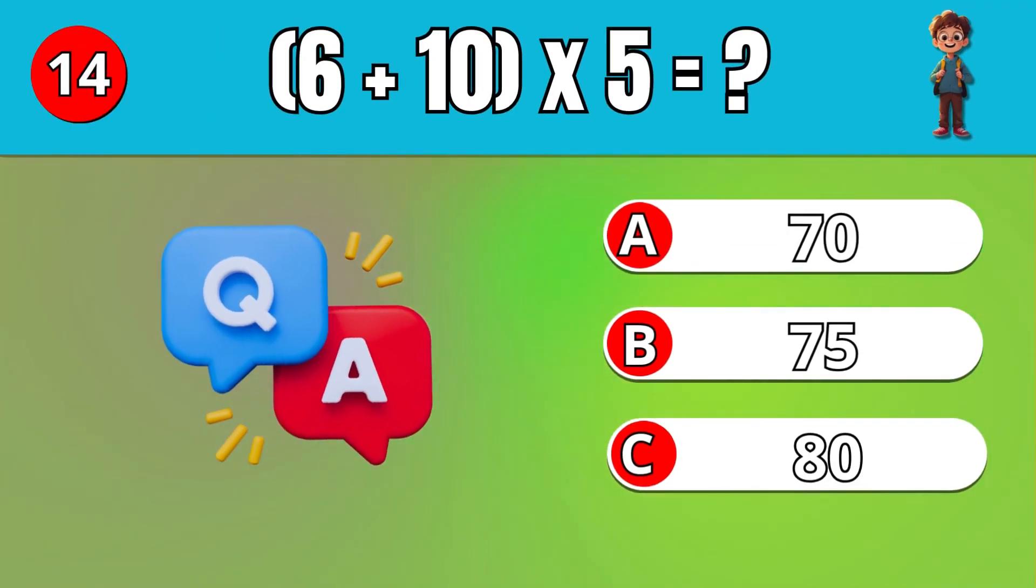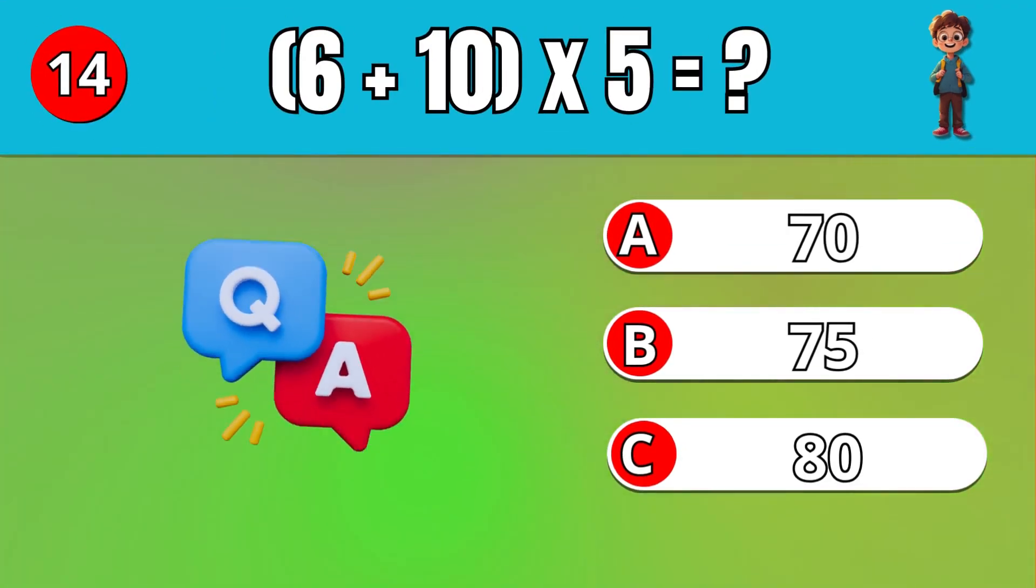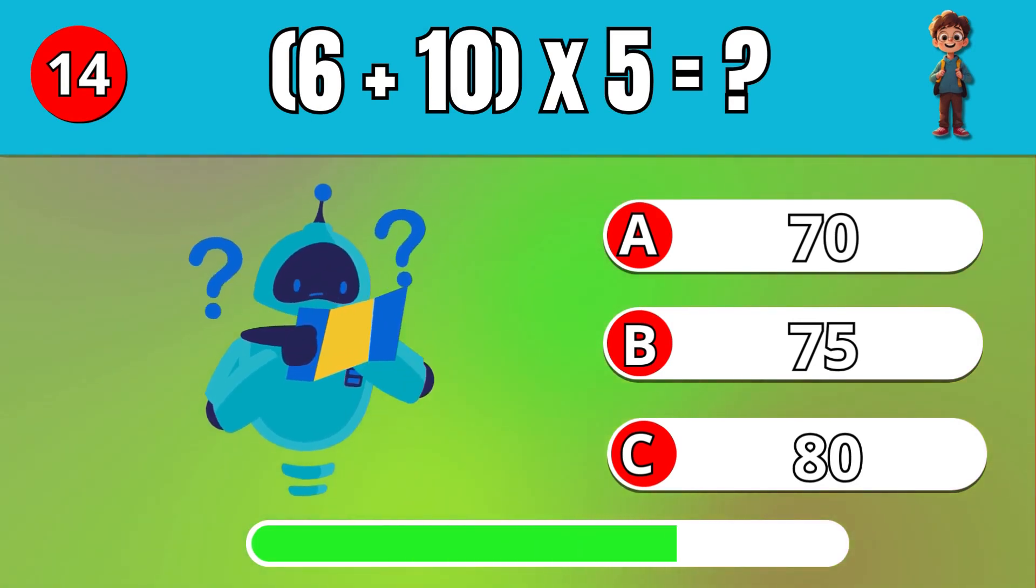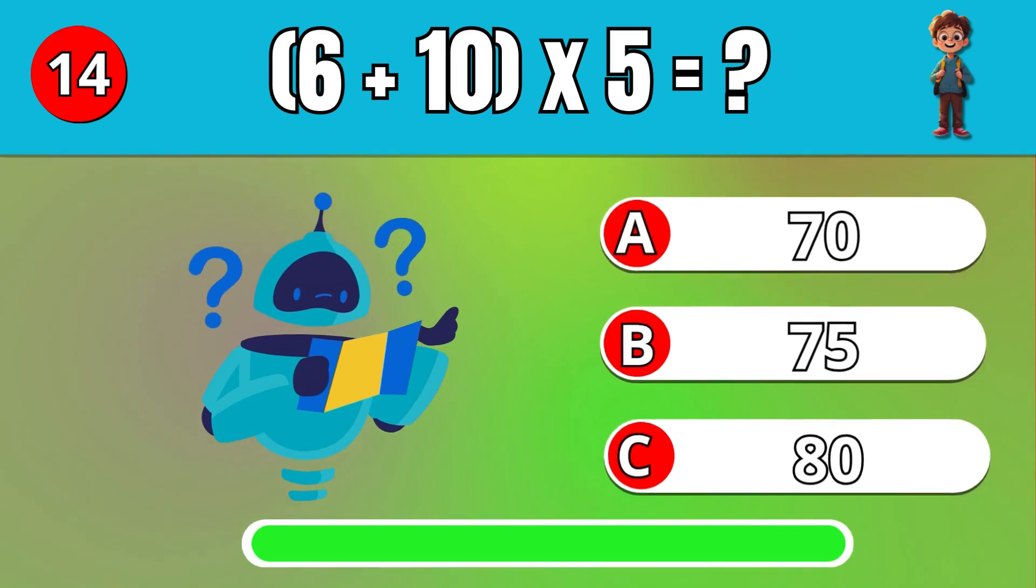What is 6 plus 10, then multiply by 5? C, 18.